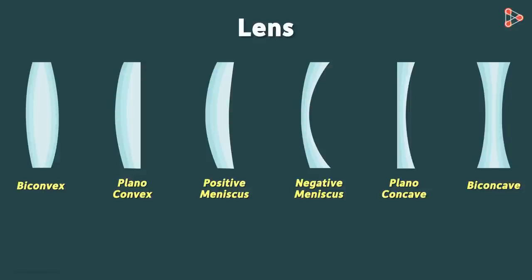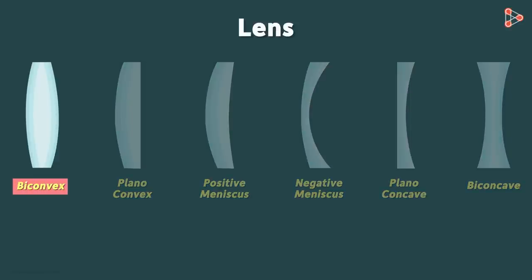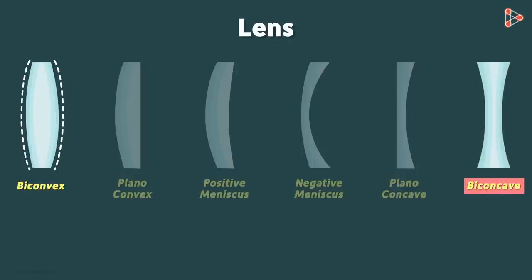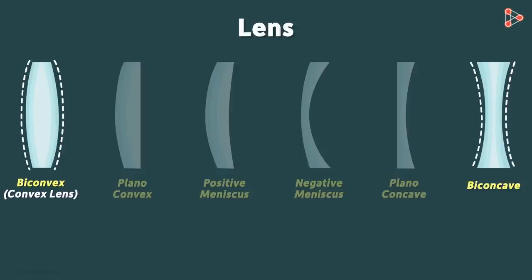A biconvex lens is a lens in which the two bounding surfaces are spherical and both curved inward. Similarly, a biconcave lens has two spherical surfaces, both curved outward. For simplicity, instead of biconvex or biconcave, we call them convex lenses and concave lenses.